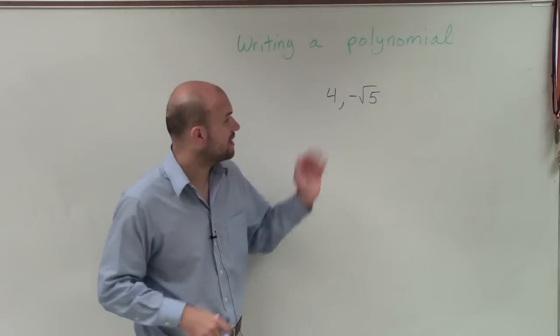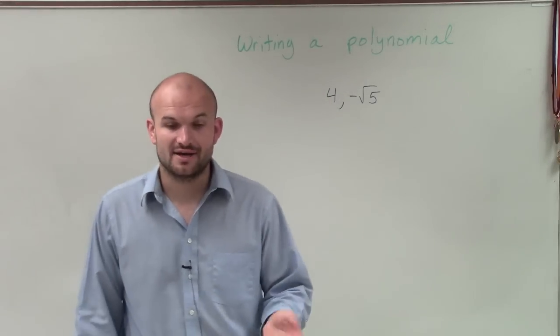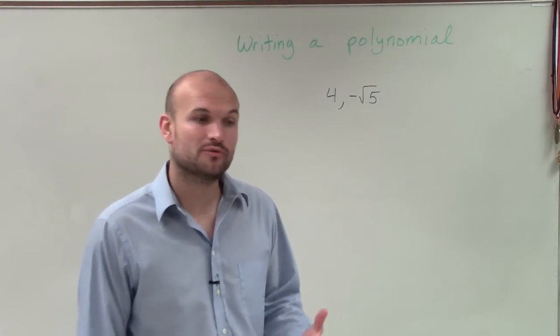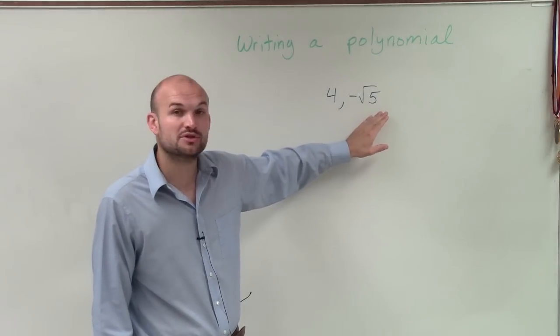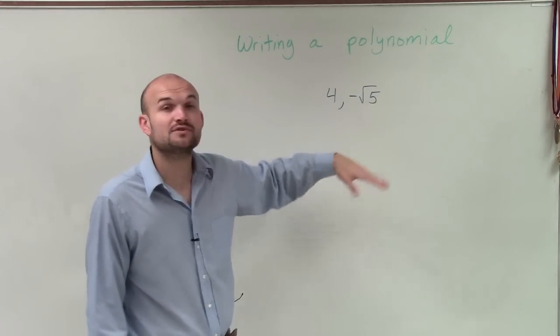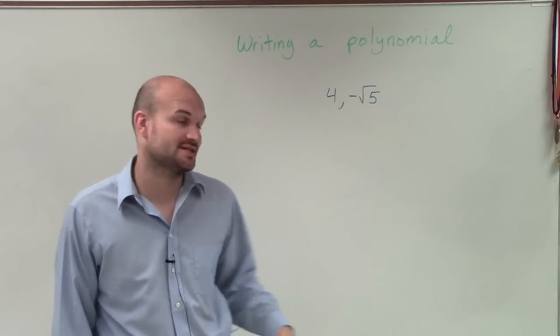Welcome. So in this case, I have 4 and negative square root of 5. And remember, when we're talking about our roots, we have to apply, especially when we have the square root of a number that's going to produce an irrational number, we have to produce the conjugate of that form.